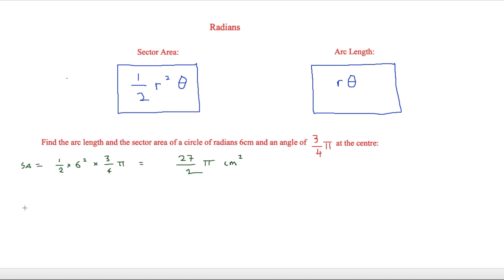For the arc length — r times theta — that's 6 multiplied by three-quarters π. Typing that into the calculator gives 9 over 2 π. As it's not an area, the unit is just centimetres.